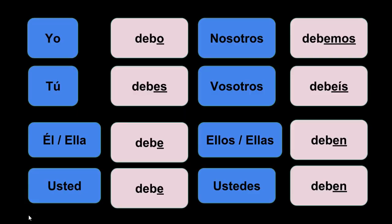Vamos a comenzar con el verbo deber. Deber means one should — deber plus infinitive. It's used to express that someone must or should do something. Thankfully, deber is conjugated like a regular ER verb. Yo debo, tú debes, él/ella debe, usted debe, nosotros debemos, vosotros debéis, ellos/ellas deben, y ustedes deben.